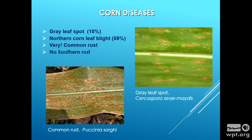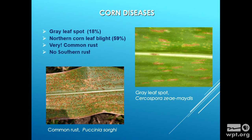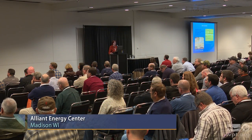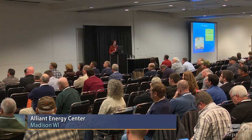In terms of real fungal diseases: gray leaf spot was in 18% of the samples examined. Northern corn leaf blight was in 60% of samples — always fairly common, but that was quite a bit. There was also a lot of common rust — aptly named. I checked every sample to make sure it's not southern rust, and I didn't see any southern rust. It may be out there, but we didn't find it.